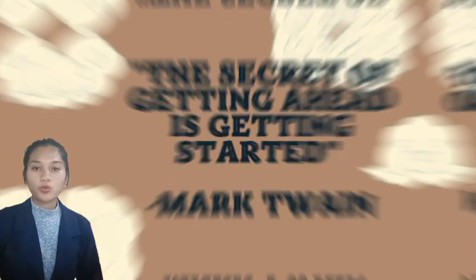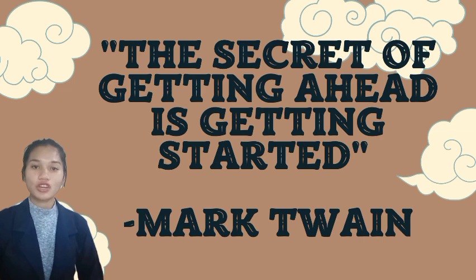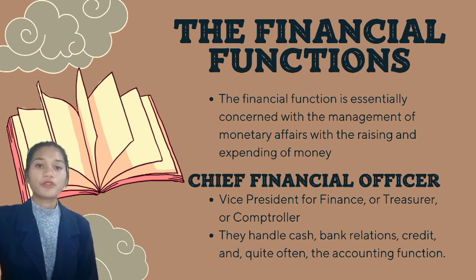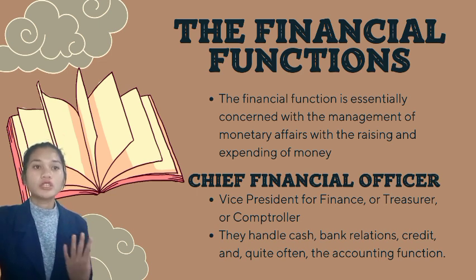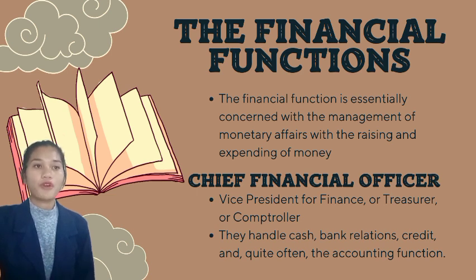According to Mark Twain, the secret of getting ahead is getting started. So let's move on to the first subtopic, which is the financial function. The chief financial officer may be called vice president for finance, treasurer, or comptroller, depending on the practice of the corporation. The treasurer arranges the insurance of stock and bonds and handles the acquisition of short-term loans.